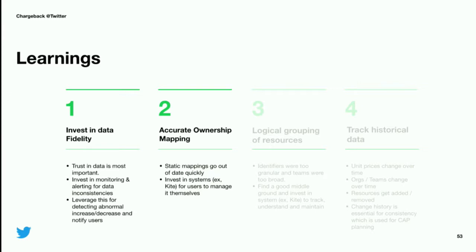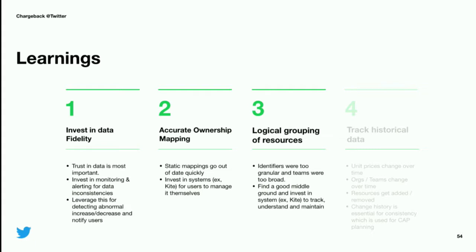One of the reasons the ownership problem is hard to solve is the lack of clear grouping primitives. Ownership mapping to a team seems too coarse, while ownership mapping to client identifiers seems too granular. There was a need for some form of logical group tied to owners. A project is a logical group we decided upon — it's a grouping of resources such as services, grants, ad hoc jobs, etc. — and it provided an easy, manageable, perceptible unit.